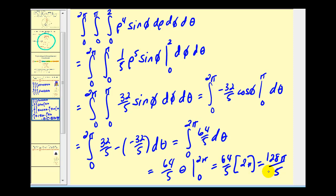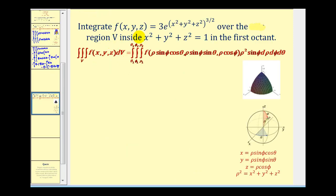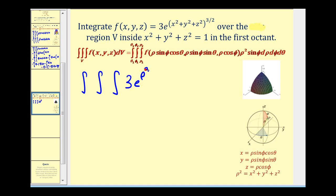Let's go and take a look at another one. Here we want to integrate the function over the region inside x squared plus y squared plus z squared equals one in the first octant. So this would be our region of integration. x squared plus y squared plus z squared equals rho squared, so rho squared raised to the three-halves power gives us rho to the third. So we have three e rho to the third, and then we have our extra factors of rho squared sine phi, d rho d phi d theta.